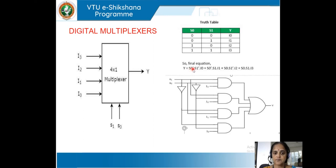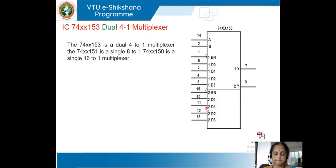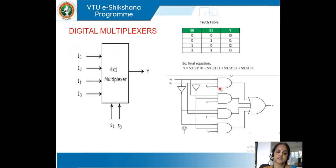Converting this equation into a diagram, we get S0·S1·I3, then S0̄ and S1 directly into I1. These are OR-ed together to get output Y. To design a 4-to-1 multiplexer, you need 4 AND gates, 2 inverters, and 1 OR gate to implement this equation.